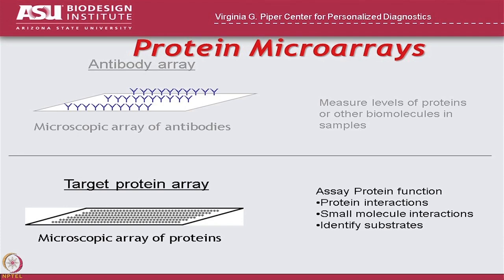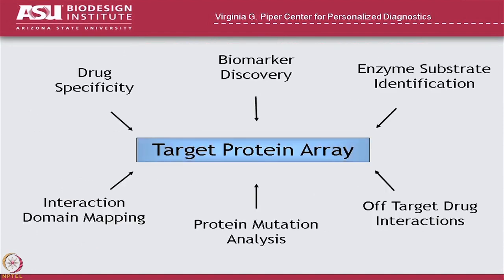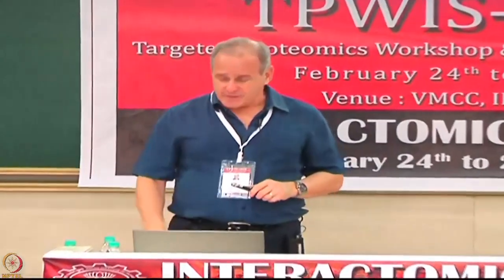The protein arrays I'm going to talk about are called target protein arrays, and the goal is to look at the proteins themselves — what do they do, who do they interact with, how do they fold, what is their function. Each different spot on the slide represents a different protein on the array. Lots of things you can do with a target protein array: you can look at drug specificity, do biomarker discovery, enzyme substrate identification, interaction domain mapping, analysis of how gene mutations affect protein function, and look at off-target protein interactions.